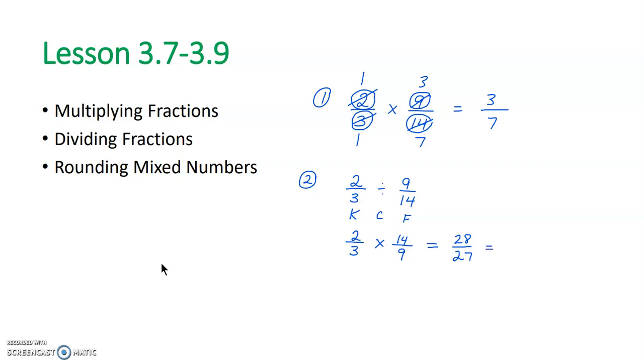And what we have here is an improper fraction, so that's not in simplified form. So we're going to change that to a mixed number. 27 divides into 28 one time with one left over. So our final answer here is 1 and 1/27. So we have the same fractions. One is multiplication and one is division. We can see that our answers are quite a bit different.